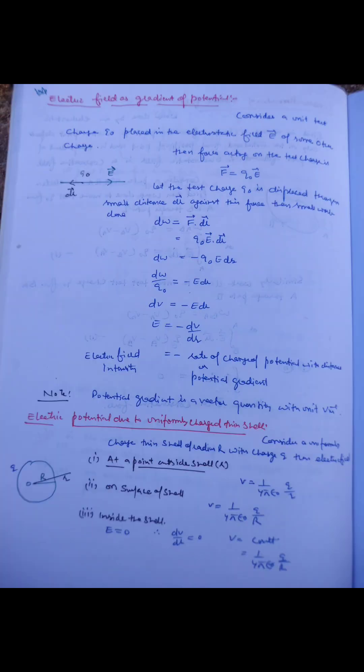We can easily prove that the electric field is conservative in nature by taking the line integral of the electric field along a closed path, which comes out to be zero. Electric field is equal to the negative of the potential gradient.